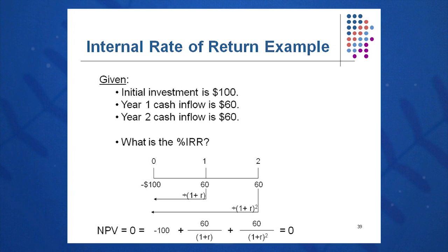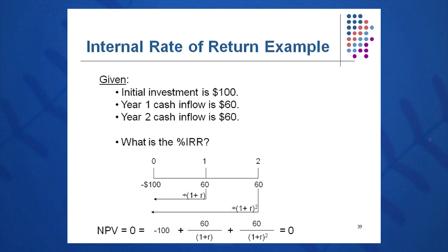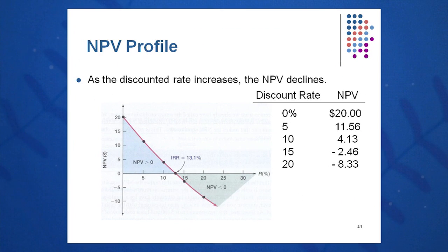This initial investment is 100 million, and it will return to the CFO 60 million in year one and 60 million in year two. The question is: what is the percent internal rate of return? Does it jump over the CFO's hurdle rate of 15%? So right away, NPV equals zero equals minus 100 plus 60 over (1 + R) plus 60 over (1 + R)² equals zero. We start an NPV profile — guessing and checking, plugging and chugging.